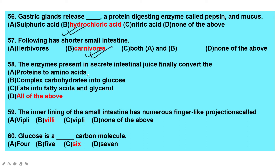The enzymes present in intestinal juice finally convert proteins to amino acids, complex carbohydrates to glucose, and fats to fatty acids and glycerol — it is all of the above. The inner lining of the small intestine has numerous finger-like projections called villi.